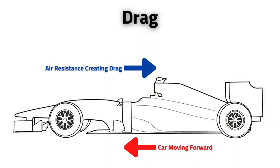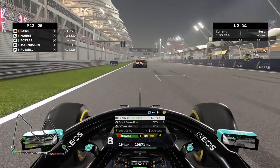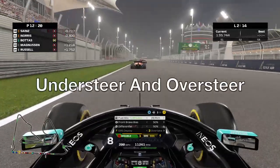Next up is drag. Drag is a direct counterpart to downforce — it's a resistant force similar to friction, opposite to an object's motion. The faster the object is moving, the more drag there is. Aerodynamic elements not only create downforce but also increase drag. It's impossible for a moving object to have zero drag, but aerodynamic elements increase the amount of that resistant force.